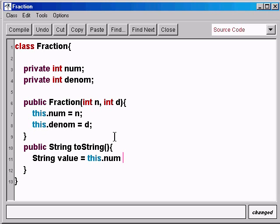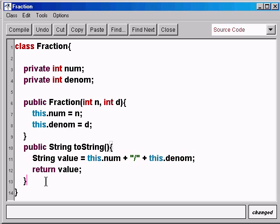Plus this little string, which is the fraction bar, plus this dot denum, the denominator. And then we simply return value. We can actually skip this and just say return this dot num plus slash plus this dot denum, and we will get the same exact result. So this will return a string that contains the value of our function.